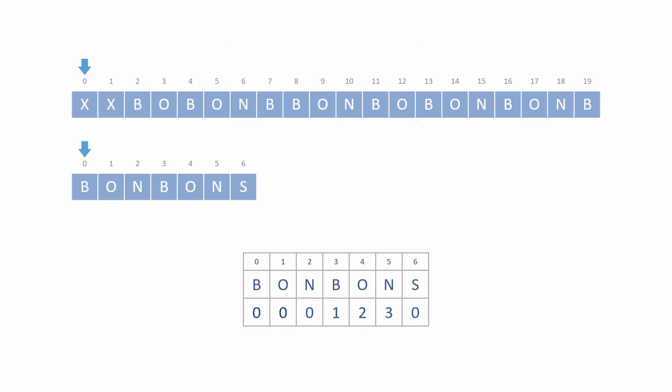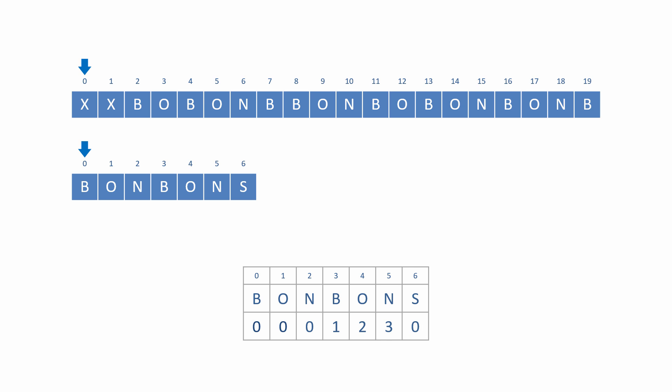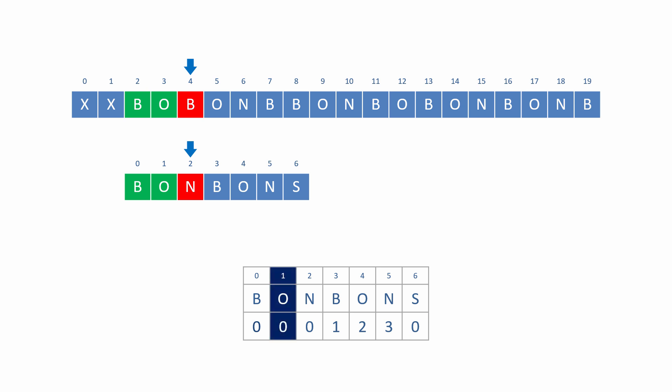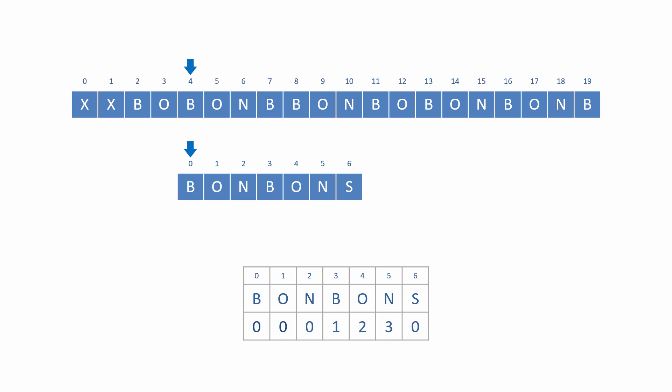Let's see it in action. We'll search this input string for the pattern bonbons and we'll consult the table whenever there's a partial match. The first couple of letters of the input string are not in the pattern, but then we find a partial match of two letters. When the third letter of the pattern fails to find a match, the table is consulted. The pattern was successfully matched up to and including the letter O at index position one of the pattern, so this is the index that is looked up. It has an LPS value of zero, so the pattern pointer is set to zero and searching resumes from here.